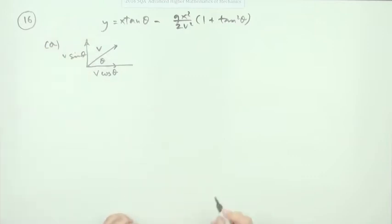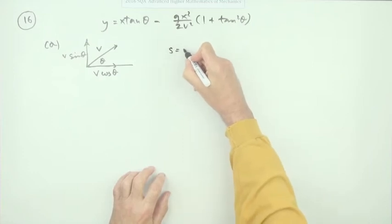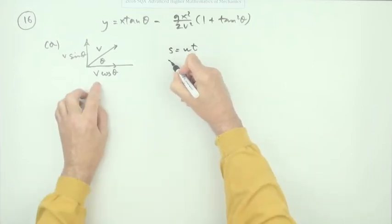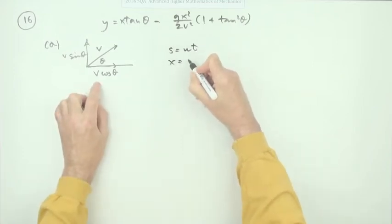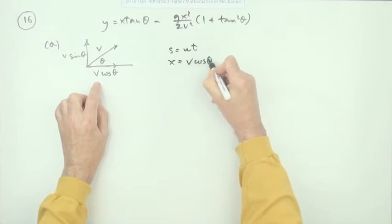The two motions are independent of each other. The one across the way is constant motion, so S equals UT. It's called x across the way and the speed is V cos theta times t.